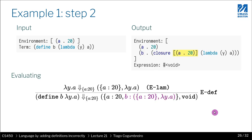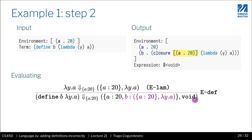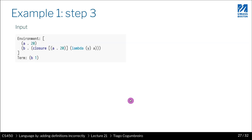To summarize step 2: we're assigning `b` to `lambda y . a`. With the initial environment `{a → 20}`, we evaluate the lambda and get a closure holding the function declaration plus the current environment. We return `void` and extend the environment with the binding `b → closure`.